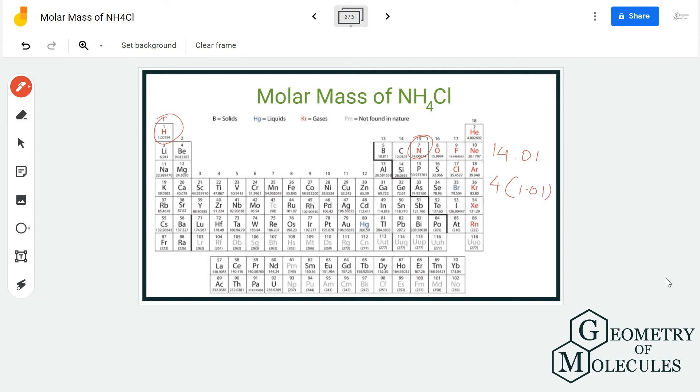And for chlorine we have 35.45. So in total, if you add up these numbers, you get 53.50 grams per mole. So that is the molar mass of NH4Cl.